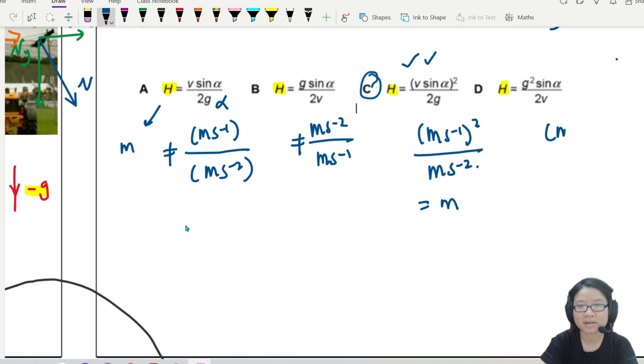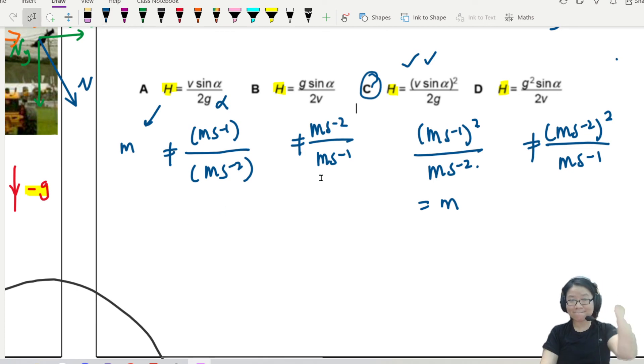Try the other one. ms⁻² squared because of g. Sine alpha got no unit. 2 got no unit. ms⁻¹. Nope. So you can brute force this way. And then of course for certain people, teacher, this one is faster. Yeah, this is faster. But what if you got two? What if two of them simplify into m? Then you cannot find the answer already. But this is called the Miss Lee's way of doing questions without doing the questions. It's called hacking.